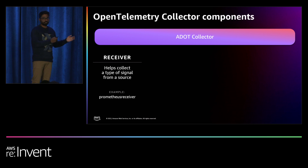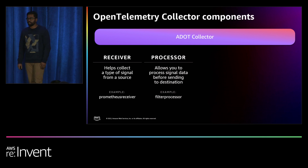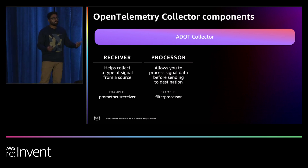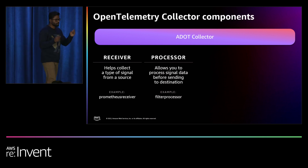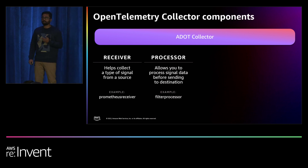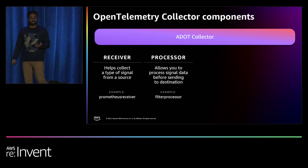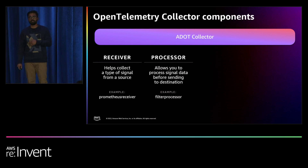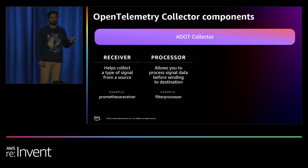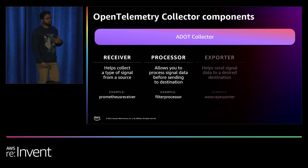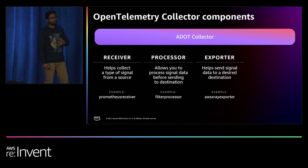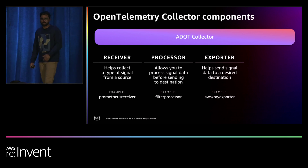The first component is the receiver. The receiver is responsible for collecting signals from different sources — it could be the Prometheus receiver, which scrapes metrics exposed in Prometheus format, or the OpenTelemetry receiver, which receives traces or metrics in OTLP format. The single job of receivers is to go to the source where the signals are, get those signals, and keep them in memory. Then you have the processor component, which allows you to process the data in memory.